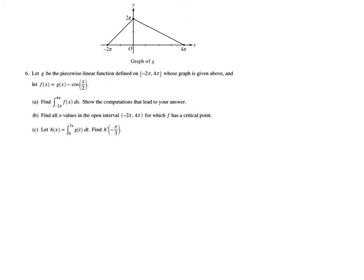In part B, it says, find all x values in the open interval, negative 2π to 4π, for which f has a critical point. So, first of all, we notice it's an open interval, so we're not including negative 2π or 4π. Those are not possible answers. Critical numbers are, of course, where the derivative is equal to 0 or is undefined. And so my derivative of f, f prime of x, would equal g prime of x plus the derivative of cosine of x over 2 is going to be plus 1 half sine of x over 2. And if you need to review your chain rule to understand where that derivative comes from, then now would be a good time to do that.